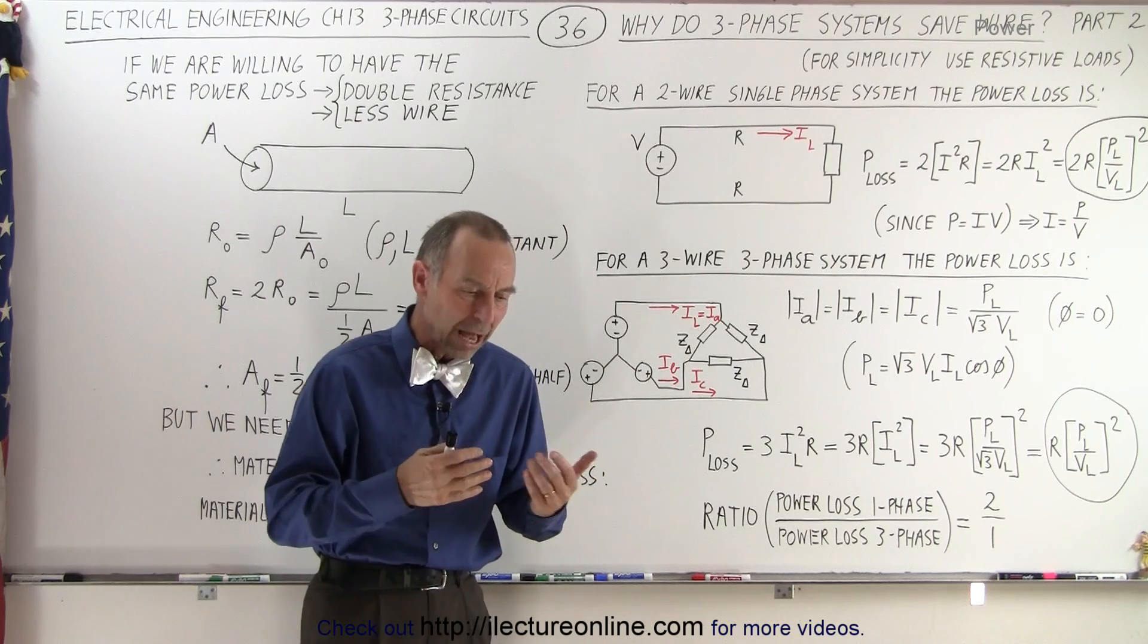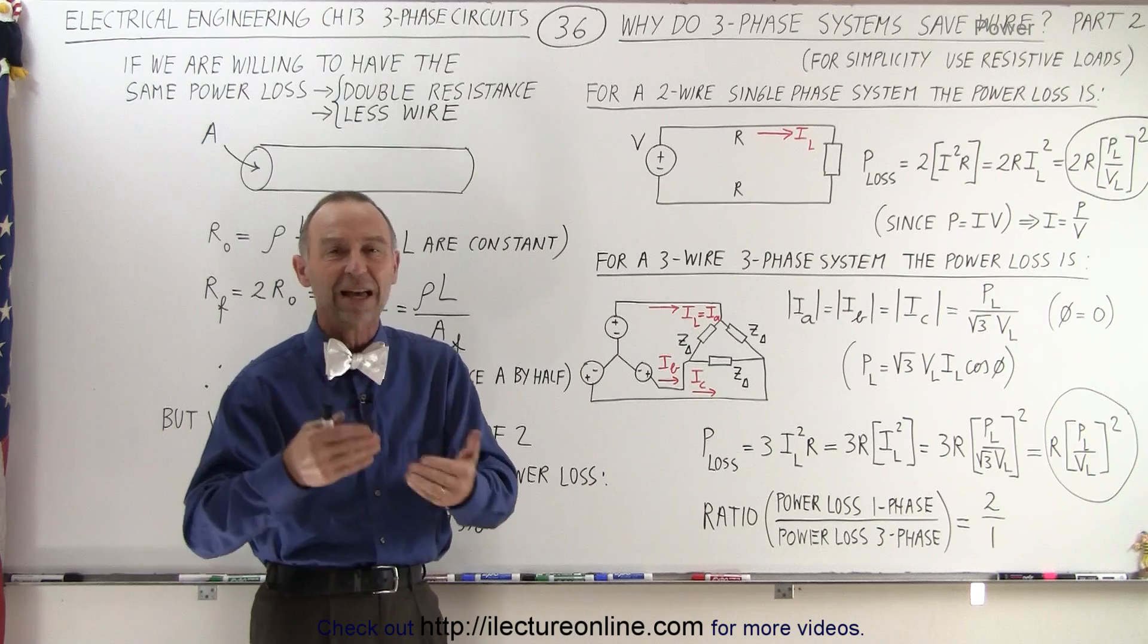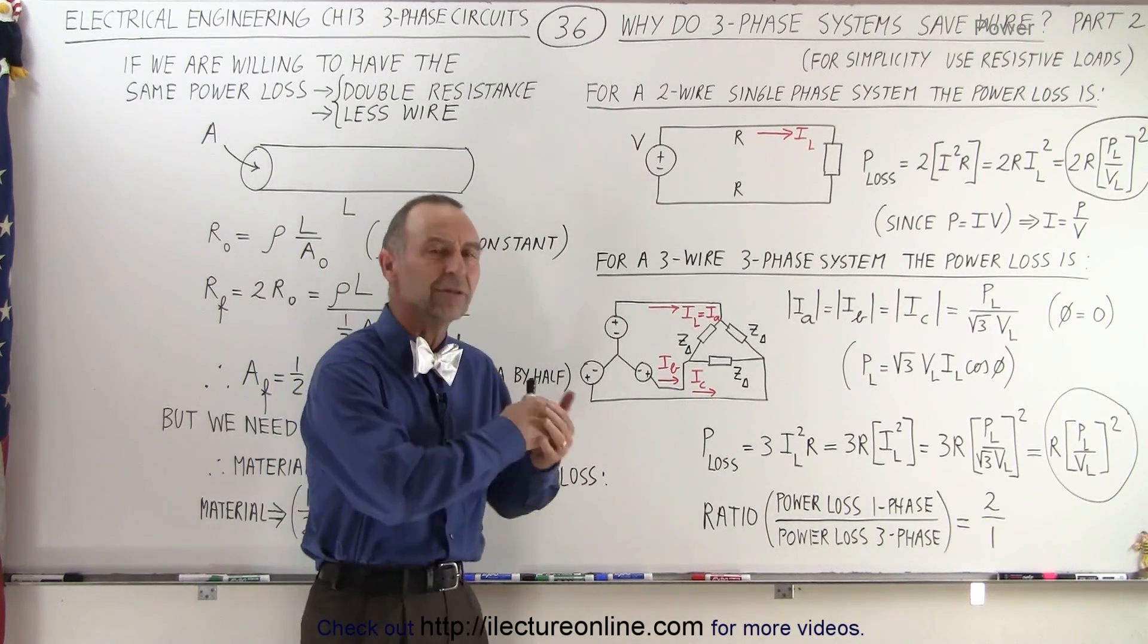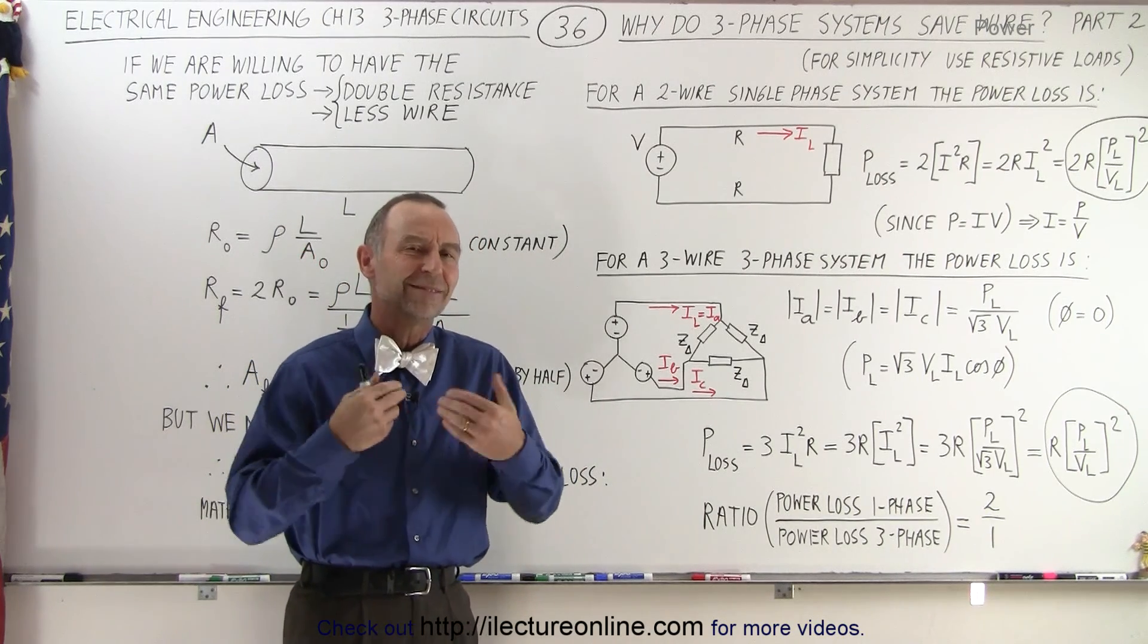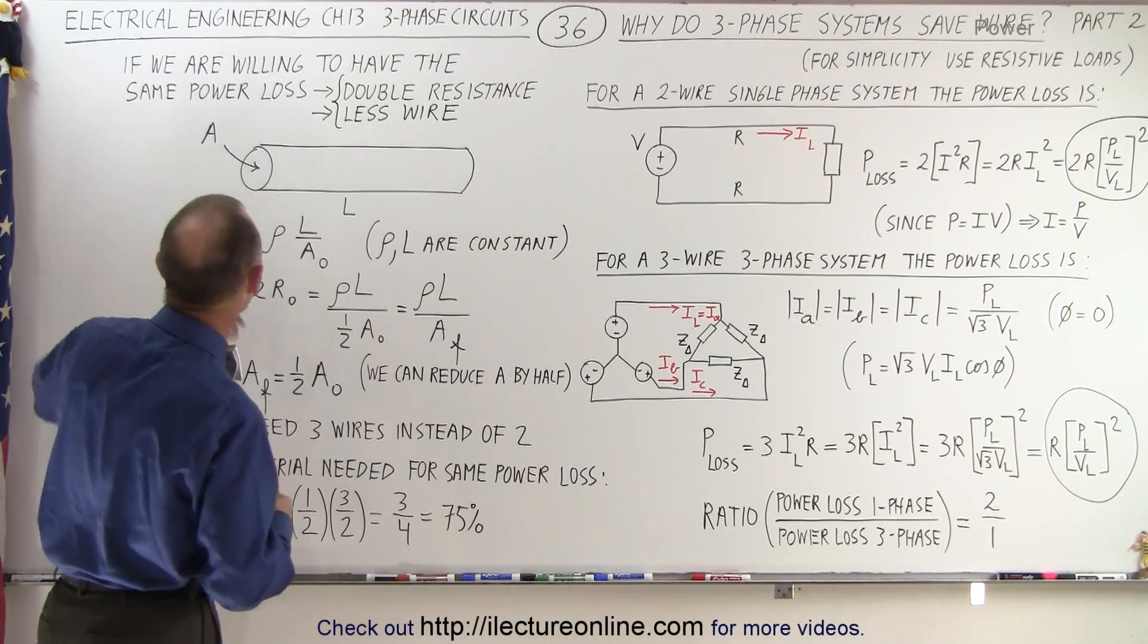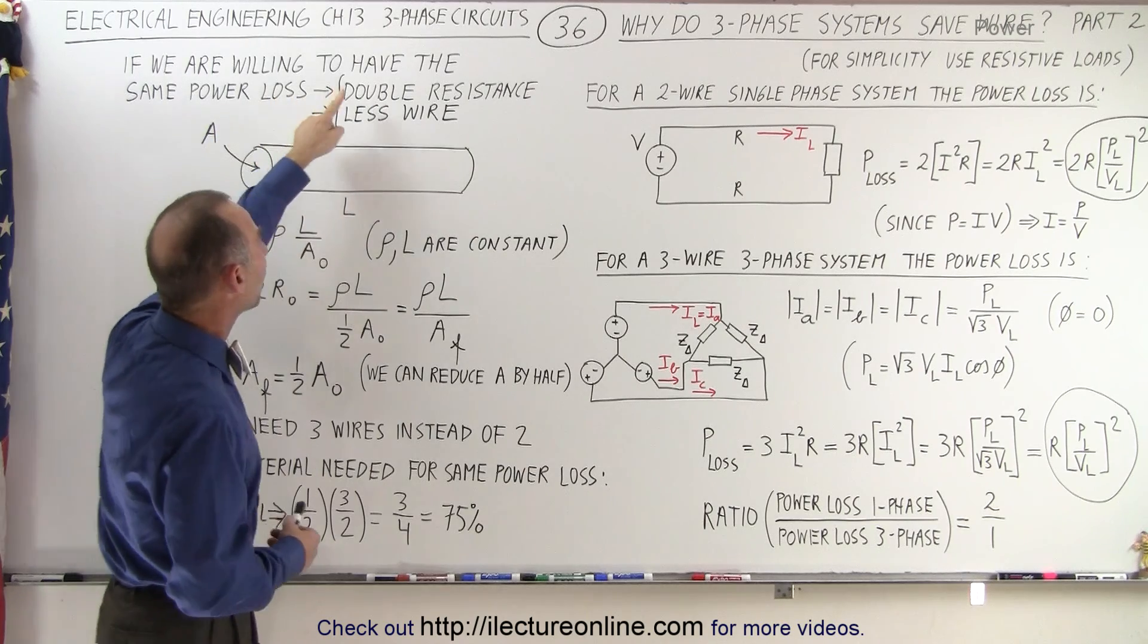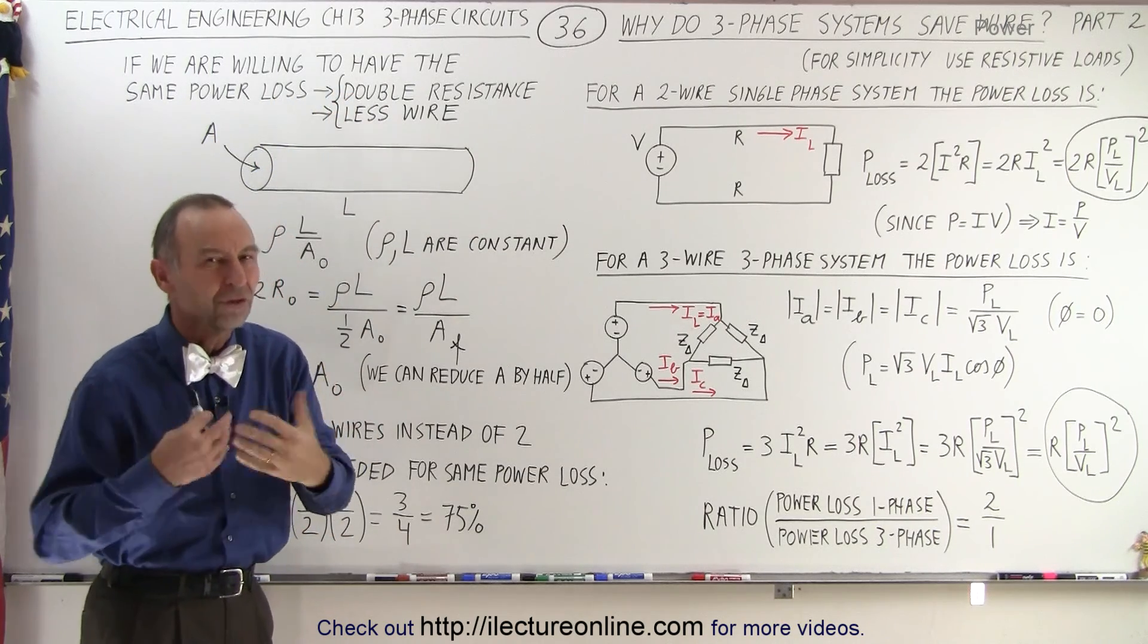So let's assume we now set up a three-phase system in such a way that the power loss is exactly the same as for a single-phase system. What would be the savings in the wiring? So if we're willing to have the same power loss, we can double the resistance by using less wire.